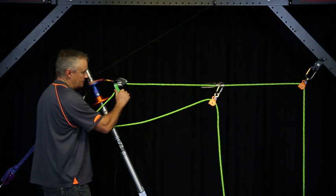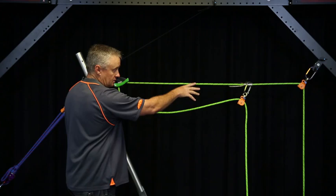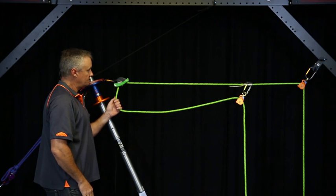The difference now is we can use this device to lower the load. And we can lower that load a fair distance. If we remove our haul cam and our pulley, we can lower that load all the way back to the bottom.